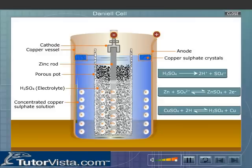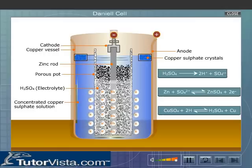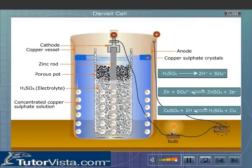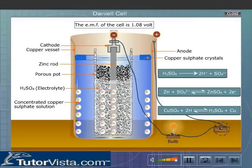To maintain the concentration of the copper sulfate solution, copper sulfate crystals are placed on a shelf or immersed in the solution. If an external copper wire is connected to the electrodes, electrons will move from the cathode to the anode, generating electricity. The EMF of the cell is 1.08 volts and remains steady, so these cells are used as standard cells.